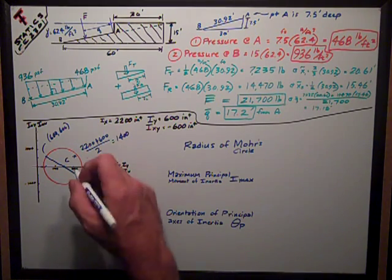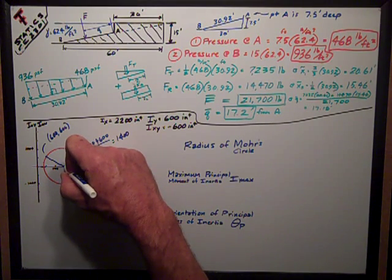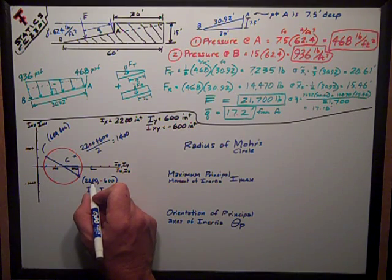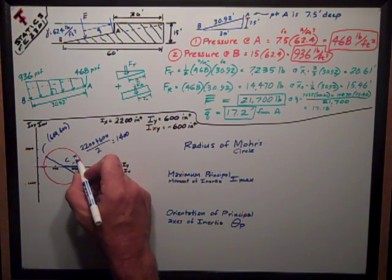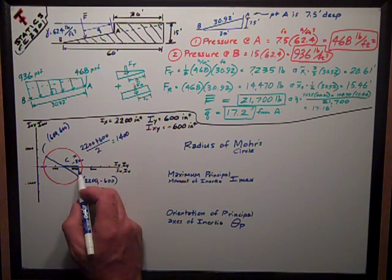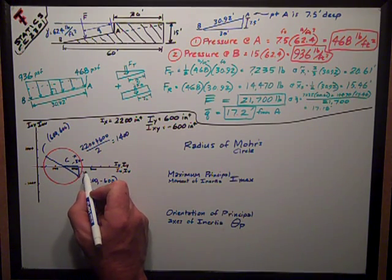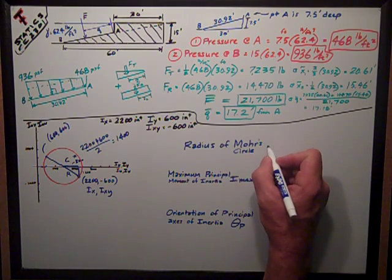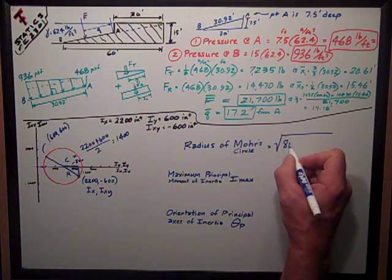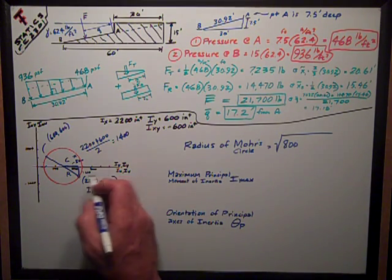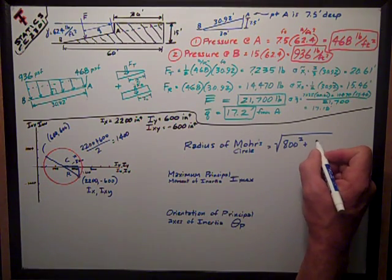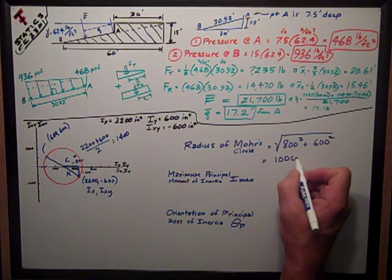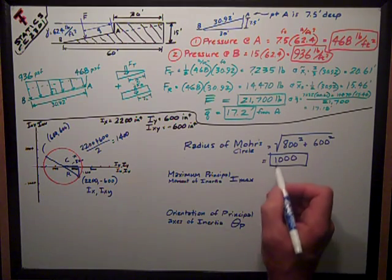So my center is at 1,400 and zero on the vertical scale. I can say that distance from the center on the horizontal scale is 1,400 minus 2,200, or 800. This vertical distance on my triangle is Ixy, 600 or negative 600. So I want this radius. It's the square root of 800 squared plus 600 squared, which equals 1,000.